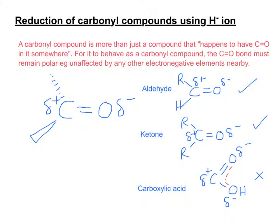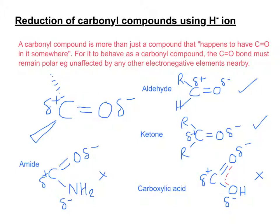Let's look at an example that perhaps hasn't come up very much in A-level chemistry — it's called an amide. An amide is C=O with an NH₂ group on it. This is not a carbonyl compound, because you've got delta negative on the nitrogen as well as on the oxygen. So it's important to remember what a carbonyl compound actually is before we start talking about how they're reduced. So let's now start looking at the reduction mechanism of carbonyl compounds — that is, aldehydes and ketones.